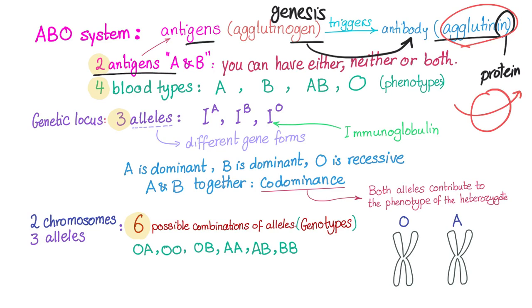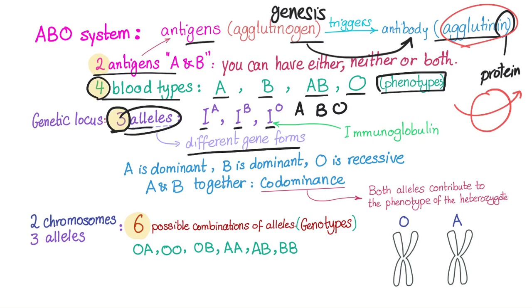We have two antigens, but we have four blood types: A, B, AB, or O. These blood types are also called the phenotypes because they are the expressed form of the genetics. With regards to the genetic locus, we have three alleles: IA, IB, and IO. In short, we call them A, B, or O. Allele means different gene forms. One gene present in more than one form. I stands for immunoglobulin.